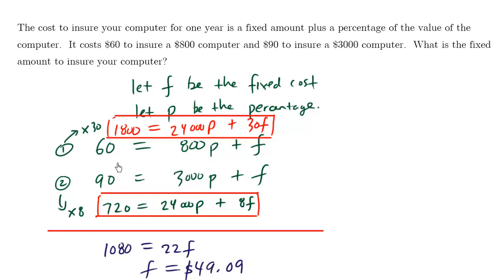So notice that for this question, even though we're trying to solve for F, this question could've also asked to solve for P, the percentage, and it wouldn't be that hard, because once you have two equations and two different unknowns, you can easily solve for either variable.